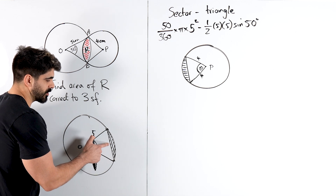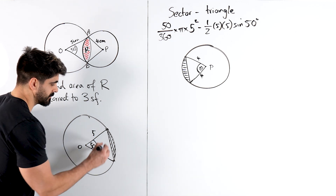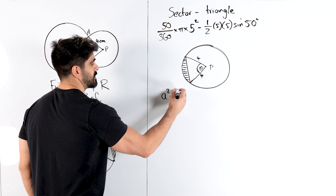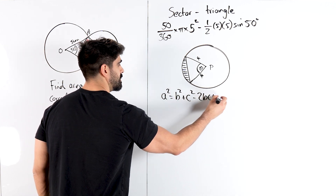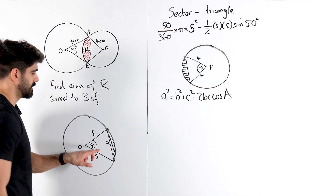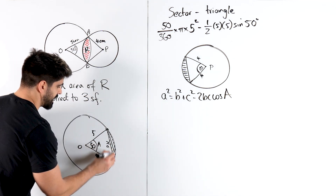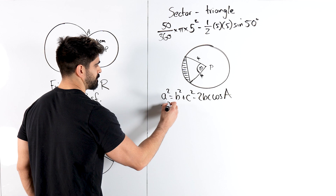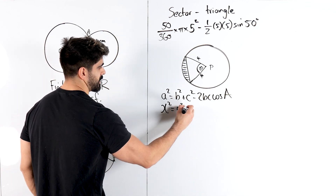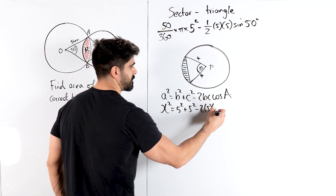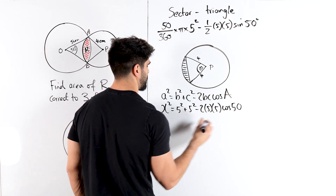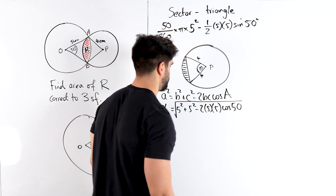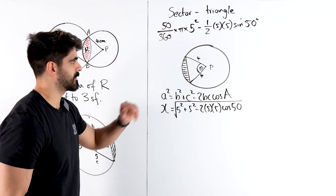Let's go back to this. How are we going to work out the length of that chord? It's going to be the cosine rule. If I call that x, the cosine rule says a² = b² + c² − 2bc·cos(A). Your capital A and lowercase a are the opposites; b and c make no difference. So we have x² = 5² + 5² − 2·5·5·cos(50). Then we're going to take the square root of all of that.